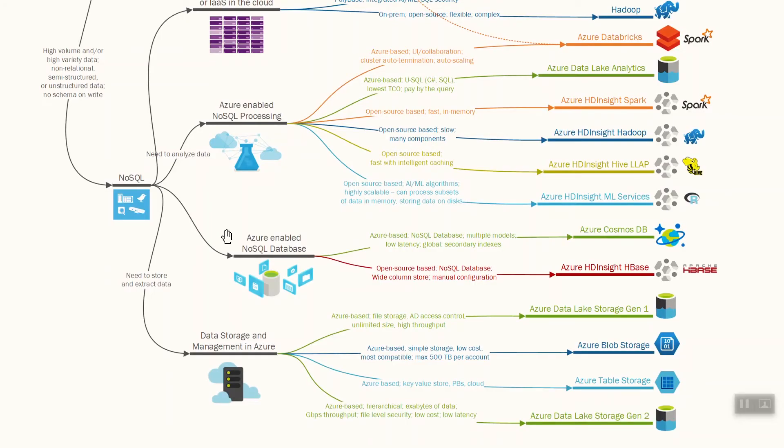When you need a NoSQL database, there are two options. You can use Azure Cosmos DB, whose key advantage is that it's a globally distributed database using high-throughput networks between Azure data centers. It supports multiple models like graph databases and wide-column, can process JSON files with different APIs, and provides multiple consistency levels and SLAs for latency across those consistency levels.